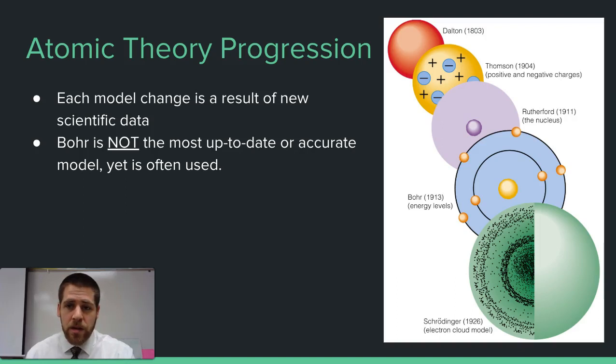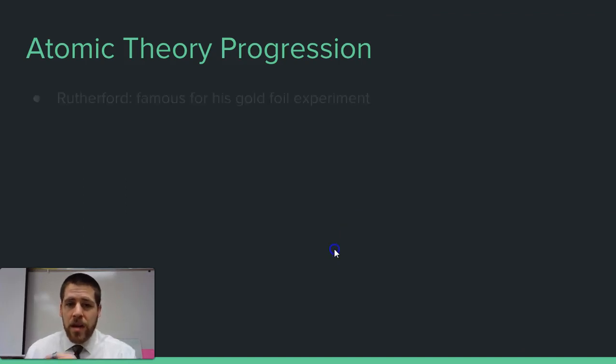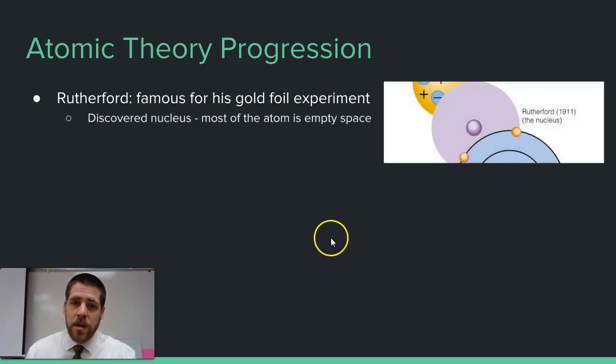Rutherford not too many years after that discovered the nucleus. This is probably the most famous experiment in atomic theory history - the gold foil experiment, where he shoots particles at gold foil, expecting them to go through completely, but some bounce back at him. This allowed him to say there must be something in the center of the atom deflecting these particles, and so he discovered the nucleus.